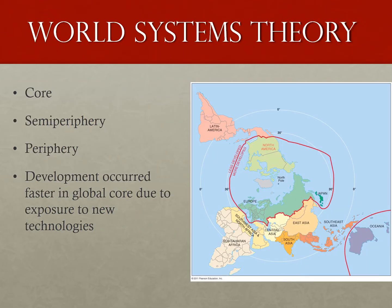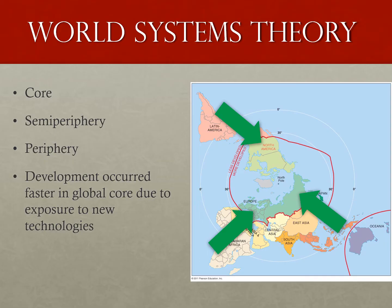But more developed and less developed isn't particularly accurate when many countries are found somewhere in the middle. So there is a theory we will introduce tonight and then dive into in more detail later in the year. The theory is known as the World Systems Theory, created by Immanuel Wallerstein, and provides an explanation for how countries got to their stages of economic development. He divided the world into three classes: the core, semi-periphery, and periphery. The core countries were the more developed countries, the wealthiest with higher education levels and more advanced technology.